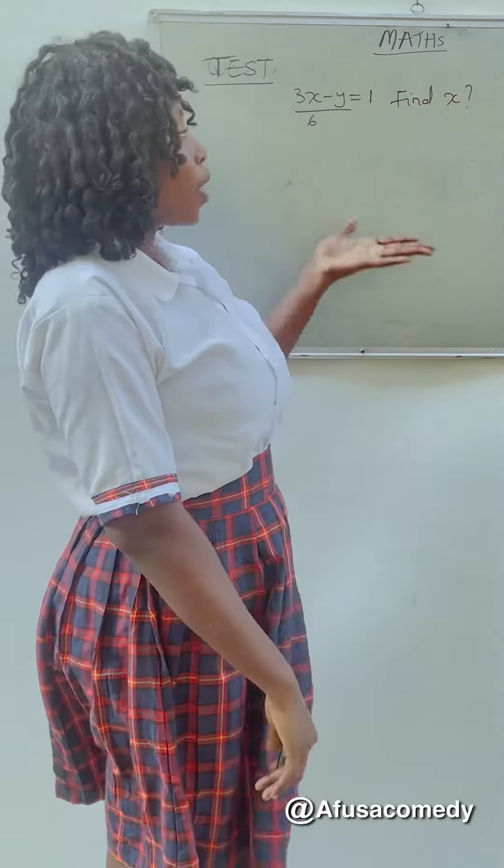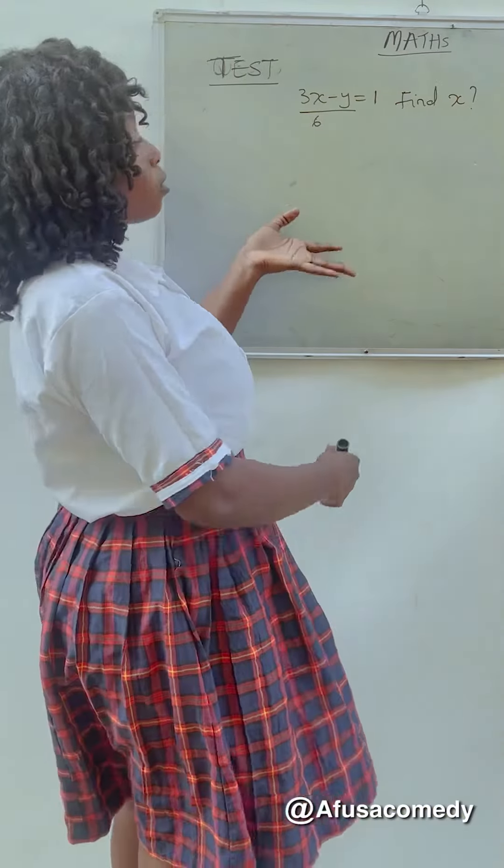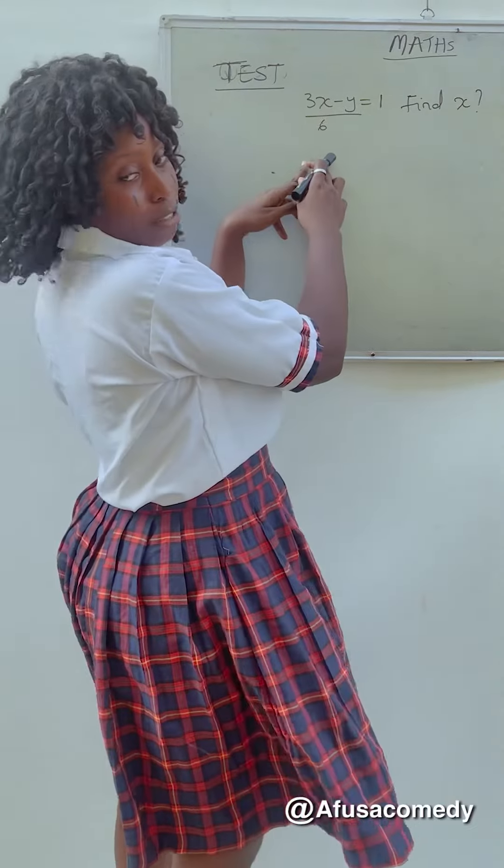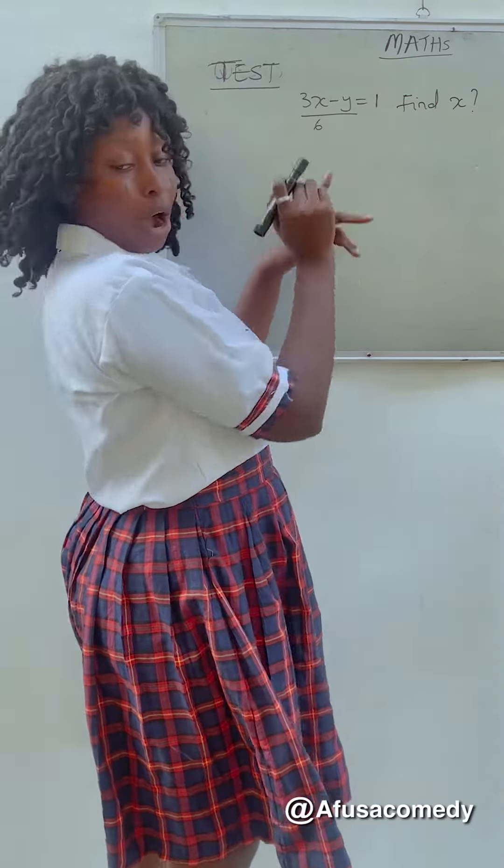Hello class, so we have a test now and this is what I was glad to say we should work it out. So the question is 3x minus y over 6 is equal to 1, then find x. I'll read the question again. The question is given, but I don't see the x. But for the sake of some people that they don't get it, people like you, so let's work it out.